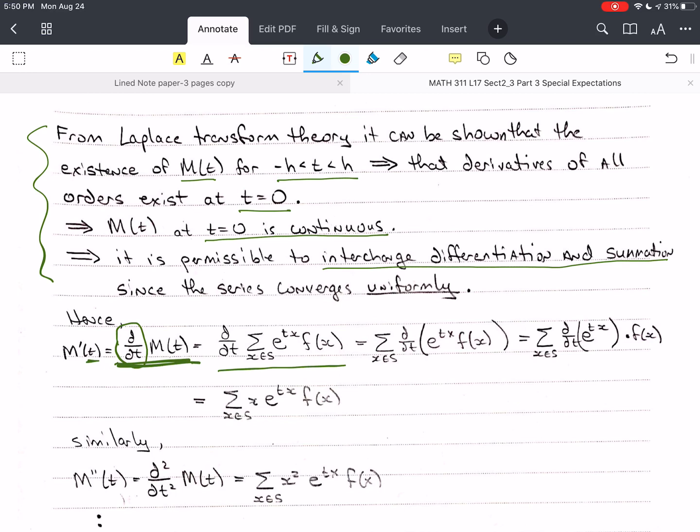As I said, we can move this inside the summation because it converges uniformly. And so, we have the derivative of e to the tx times f of x. But f of x doesn't have anything to do with t, so it can come out of the derivative. So I've moved it out back here, and we've got the derivative with respect to t of e to the tx.